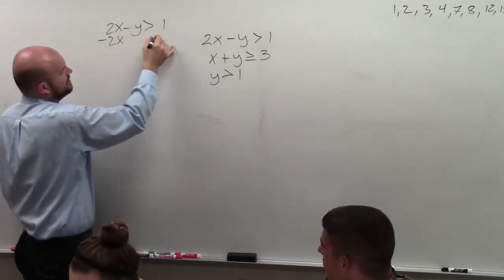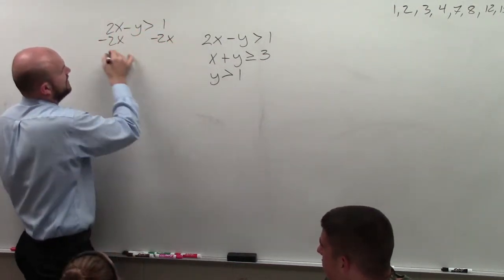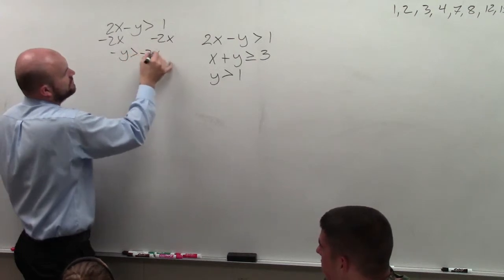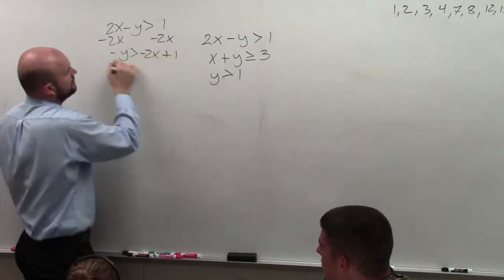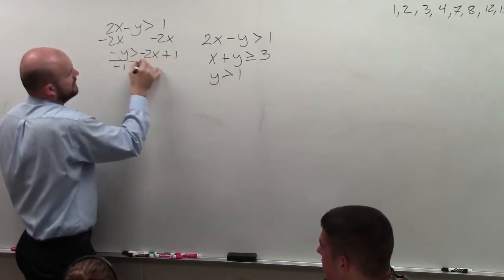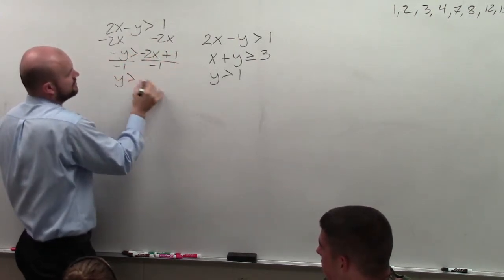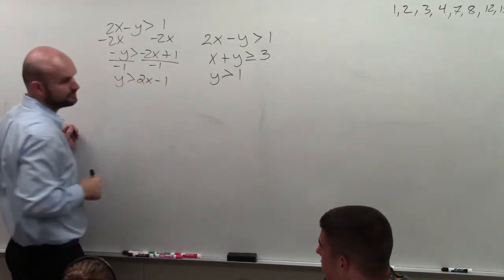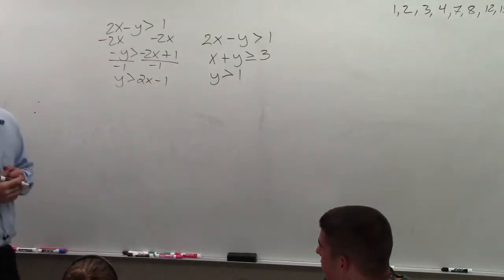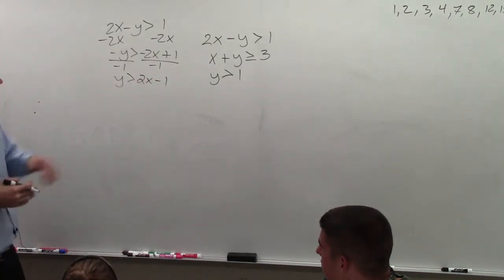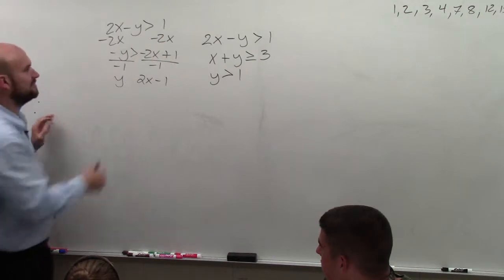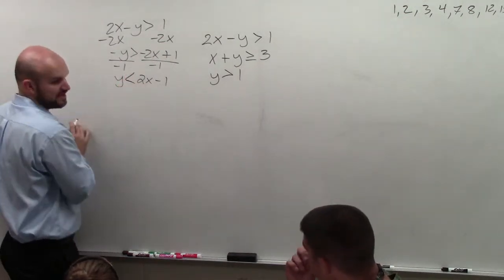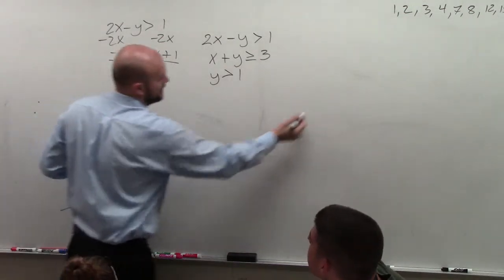So here I subtract the 2x. I have negative y is greater than negative 2x plus 1. Divide by negative 1 — and y is less than 2x minus 1. You have to flip the sign when you multiply or divide by a negative number. Thank you for catching that.